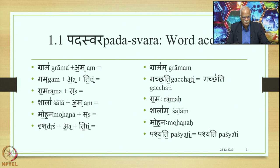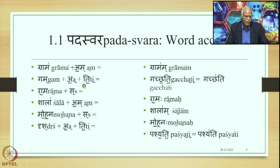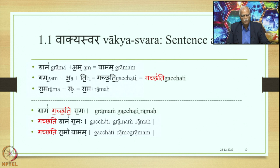So these are the Pada accents composed out of the Prakriti and Pratyaya. The Prakriti has got an accent, the Pratyaya has got an accent, and when they are joined together there is one accent for both of them. When three constituents are joined together and made into one unit, there is only one accent. Now when we join those elements in the form of a sentence, Gramam is initially Accented, Gachyati is also initially Accented, and Ramaha is finally Accented.